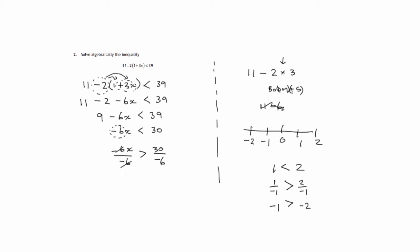That negative 6 is cancelled. We get x being greater than positive divided by negative. Negative 6 into 30 is 5. So we've got x being greater than negative 5.